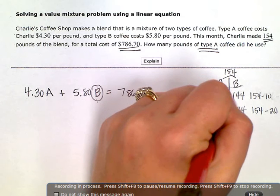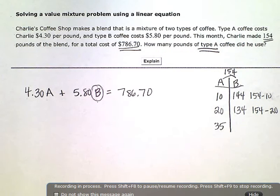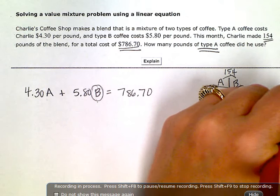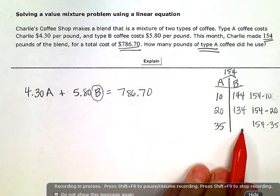So if I keep doing this and just put in specific numbers, okay, what if there was 35 pounds of coffee A? Well, I do 154 minus 35 to figure out coffee B here.